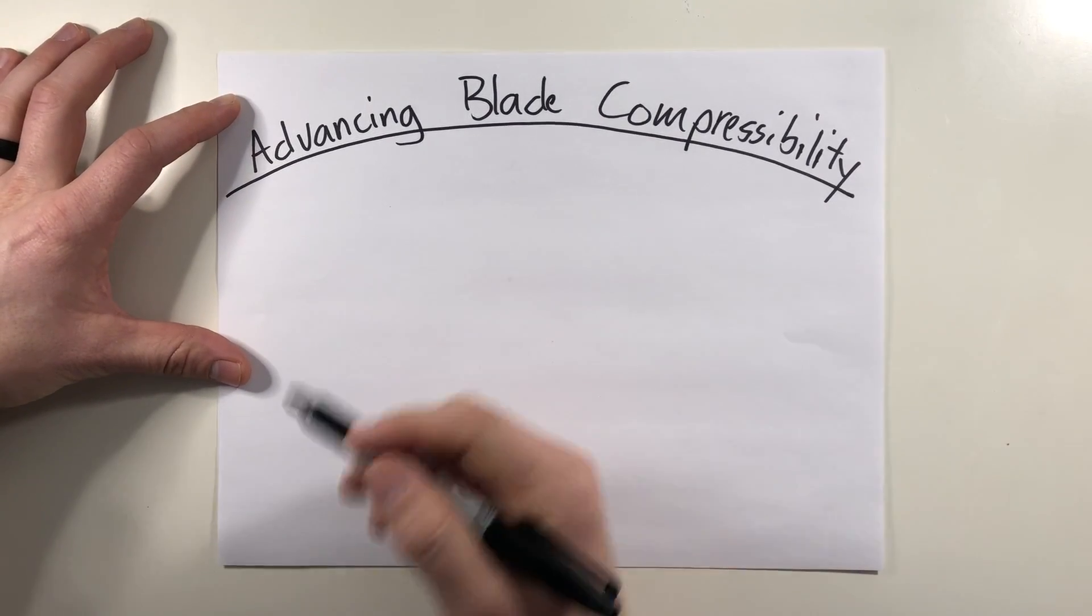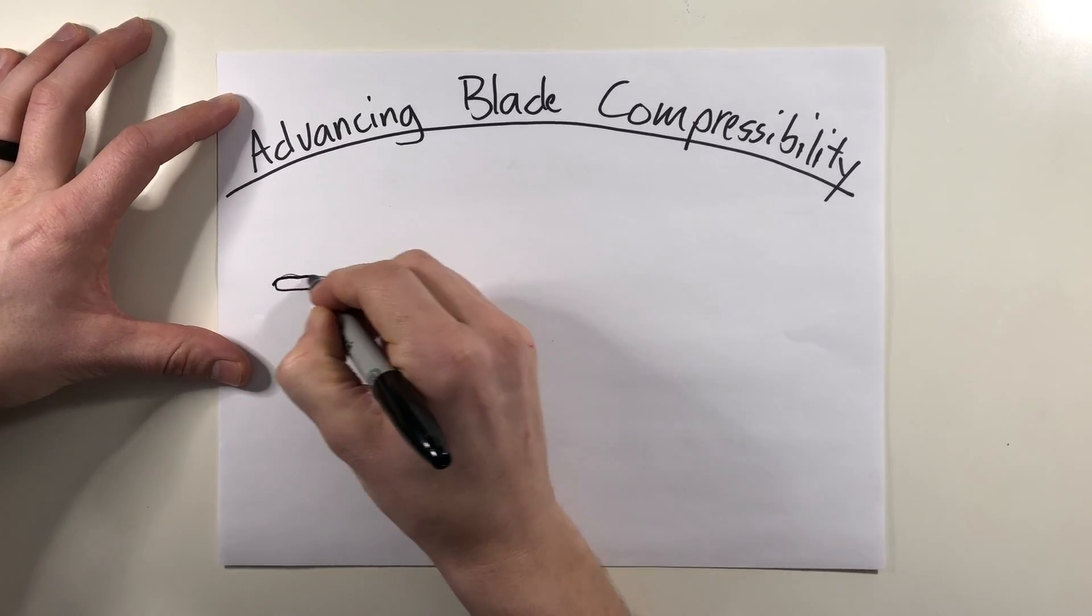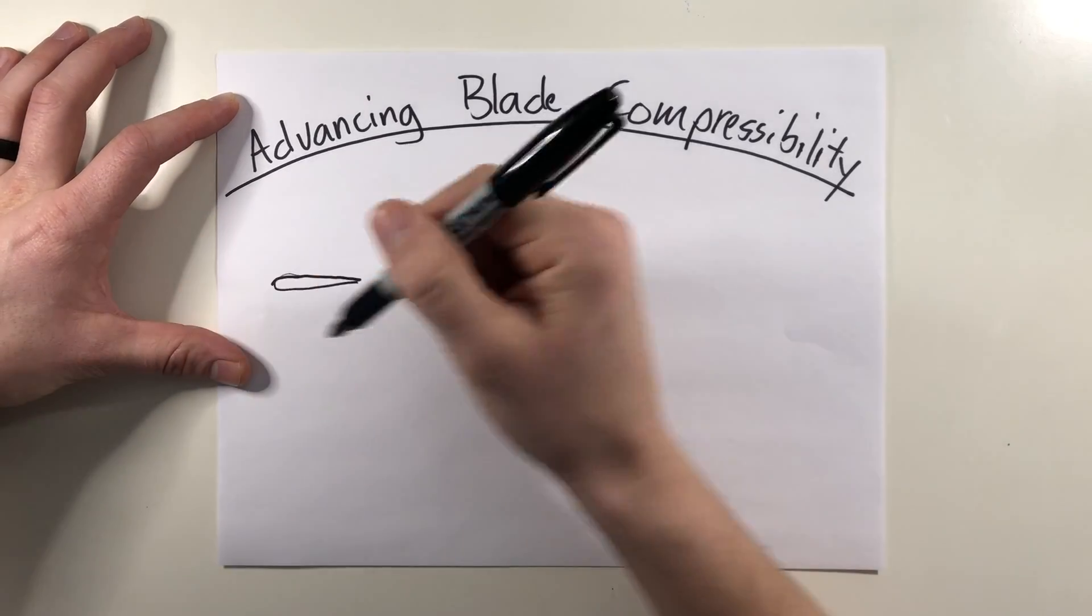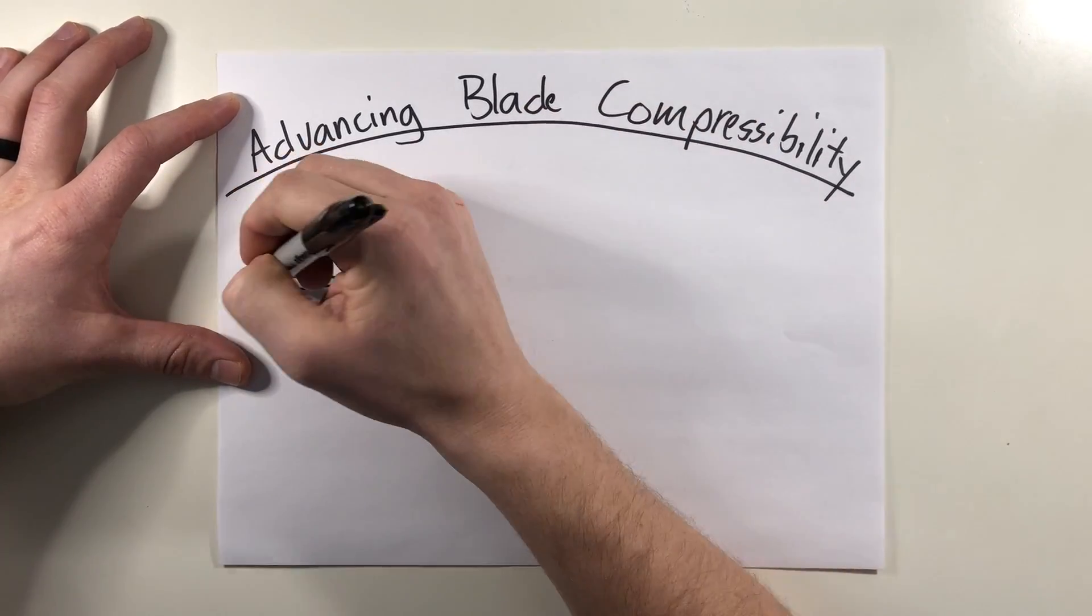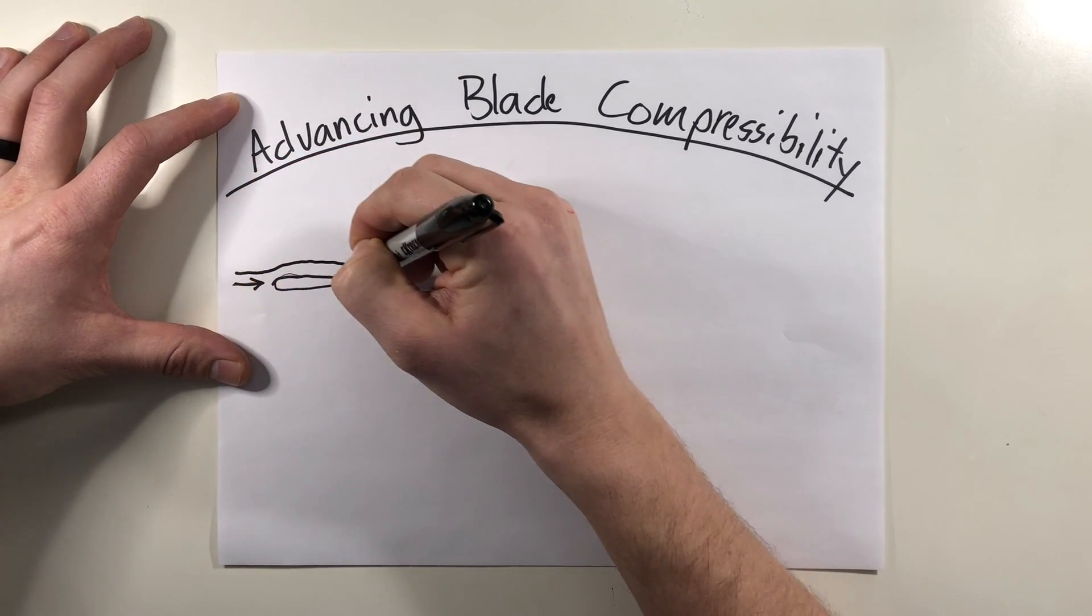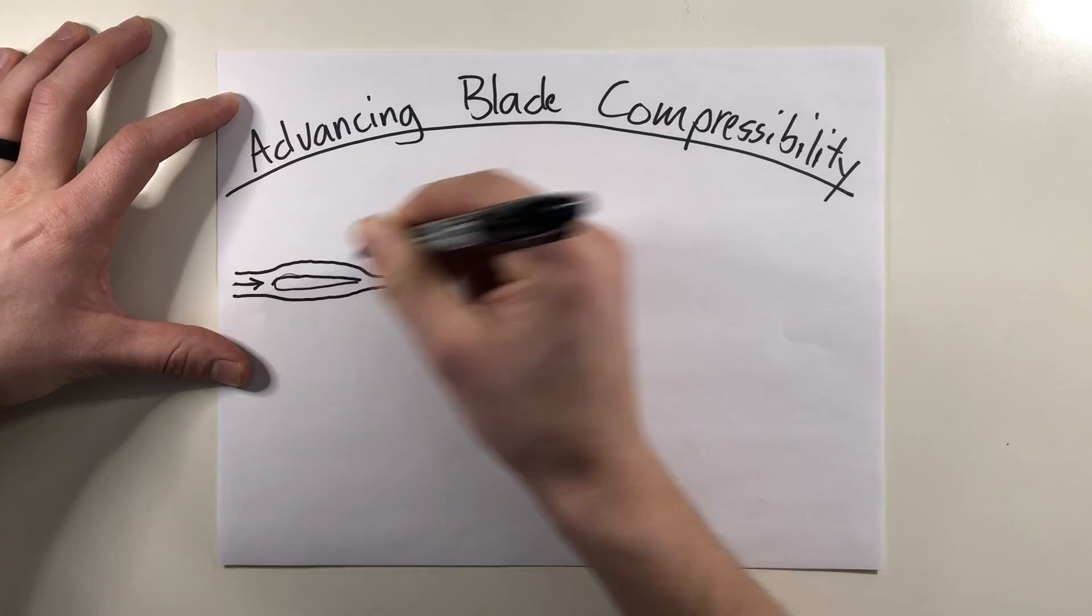So normal airflow over a wing is going to look something like this, or an airfoil. So as the airflow approaches the airfoil, it has a relatively smooth laminar flow. So as the air gets closer to the wing, it almost hugs the shape of the airfoil as it passes around it.